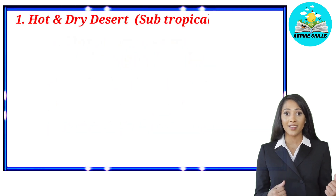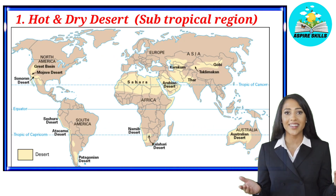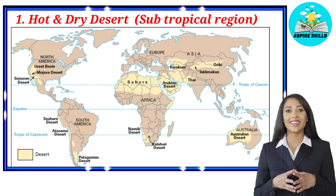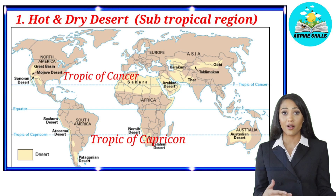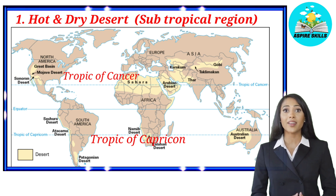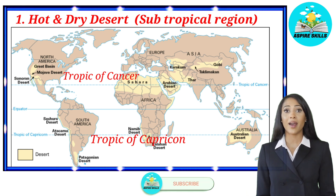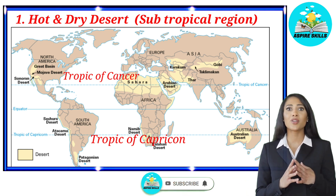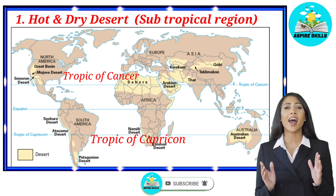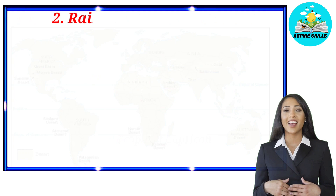The first one is hot and dry desert, which extends across the subtropical region. They exist along the Tropic of Cancer and Tropic of Capricorn. The subtropical region is due to pressure differences and circulation patterns of air masses that hinder the formation of clouds, and that's why there is very little rainfall, which eventually causes subtropical deserts. Basically, a subtropical region is a high pressure zone.